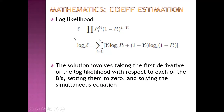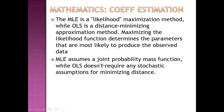For coefficient estimation, we calculate log likelihood. The solution involves taking the first derivative of log likelihood with respect to each of the coefficients, setting them to 0, and solving the simultaneous equations. The maximum likelihood estimate is a likelihood maximization method, whereas ordinary least squares regression is a distance minimizing approximation method. Maximizing the likelihood function determines the parameters most likely to produce the observed data. MLE assumes a joint probability mass function, whereas OLS doesn't require any stochastic assumption for minimizing distance.